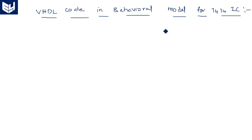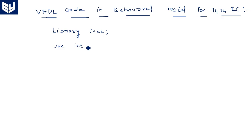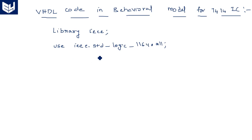In the 7474 IC we have two D flip-flops, but we will write code for only one D flip-flop. For any VHDL code, whatever style — behavioral, structural, or data flow — we should take two lines: library IEEE; use IEEE.STD_LOGIC_1164.all. If you want to add unsigned arithmetic you can, but it is only needed for mathematical operations.